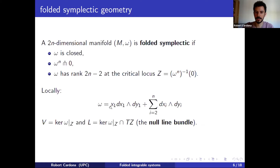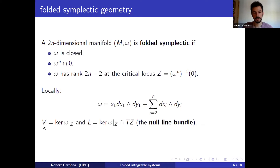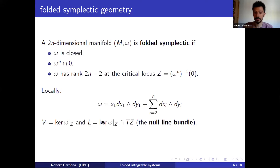The Darboux normal form for folded symplectic manifolds is what you would expect: you have a zero in the coordinate defining Z. There are two very nice sub-bundles defined over the hypersurface. V is the kernel of the two-form along Z — since the rank is 2n−2, this is a bundle of rank 2. And then there is the null line bundle, a rank-1 bundle on Z given by the kernel restricted to the tangent planes of Z.